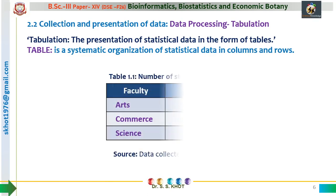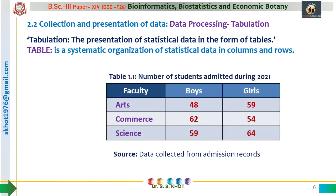Let us take an example of a typical table. In this figure, we have represented a typical tabular representation of data. The table is numbered 1.1, meaning it is the first table of the first unit. If there is no division into units, we can label tables as table 1, 2, 3, 4, and so on. The title of this table reads 'Number of students admitted during 2021.' These figures represent the number of students, clarifying to whom this data belongs — the numbers are of students admitted during a specific year.